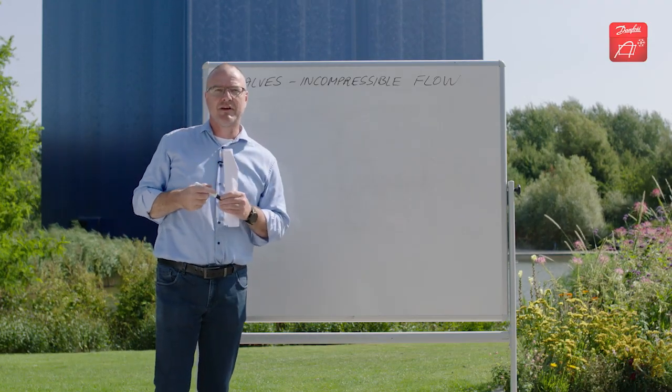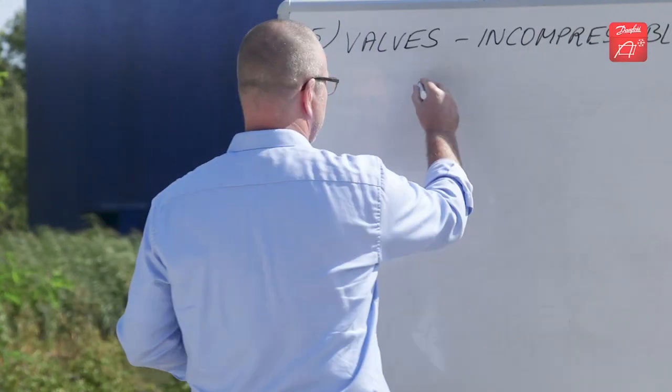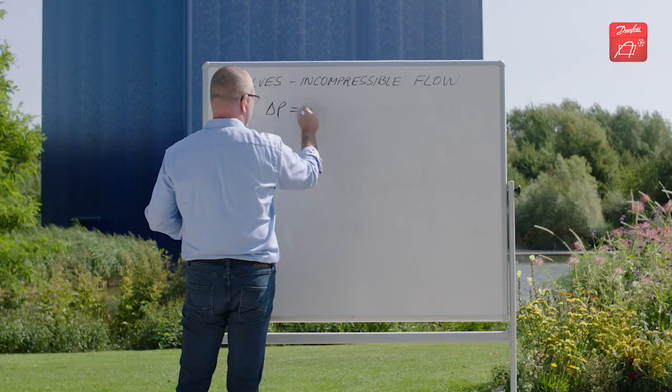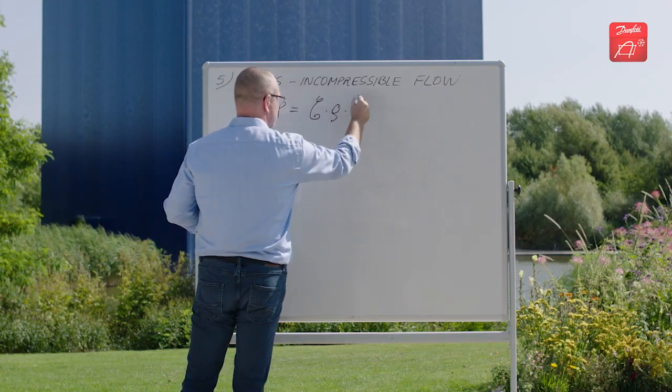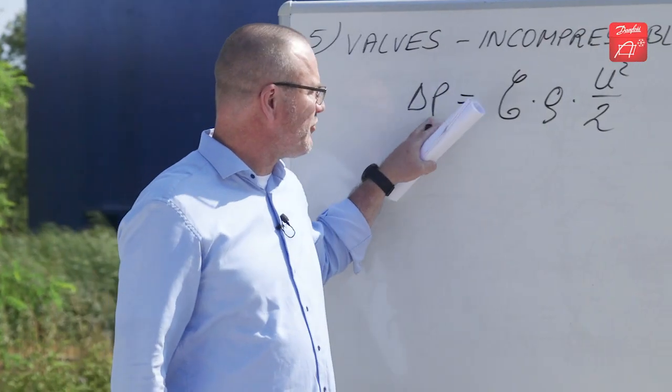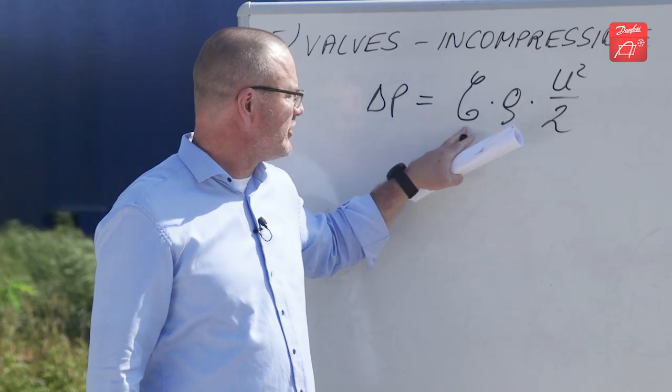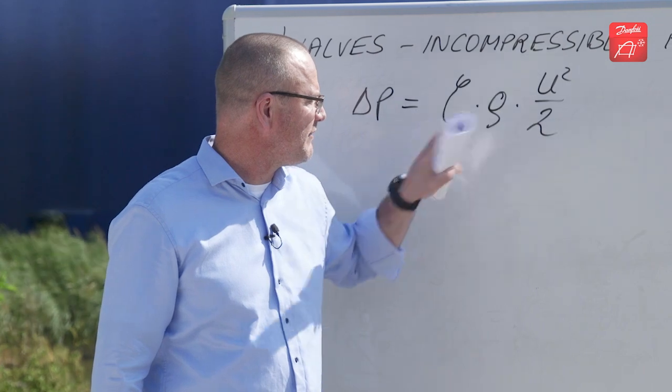In the last session we developed an equation for the pressure drop in fittings, so let's recap. This equation said that the pressure drop is equal to the resistance coefficient times the density times velocity squared divided by two.